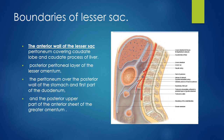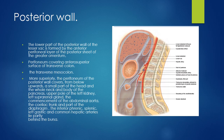Now we will discuss the boundaries of the lesser sac. The anterior wall of the lesser sac is formed by peritoneum covering the quadrate lobe and quadrate process of the liver, then it reflects from the fissure for ligamentum venosum, then it is formed by the posterior peritoneal layer of the lesser omentum, peritoneum covering the posterior wall of the stomach, and then the posterior upper part of the anterior sheet of greater omentum — that is layer 2 of greater omentum forms the anterior wall. The posterior wall is formed in the lower part by the anterior peritoneal layer of the posterior sheath of the greater omentum — that is layer 3 — forming the posterior wall of the lesser sac in the lower part.